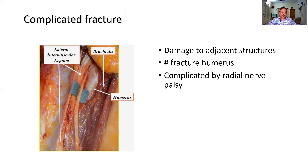Complicated fracture — as I mentioned, it is not the fracture by itself, but the damage to the adjoining structures such as the nerves or the blood vessels that makes it complicated. It can result in a nerve palsy.